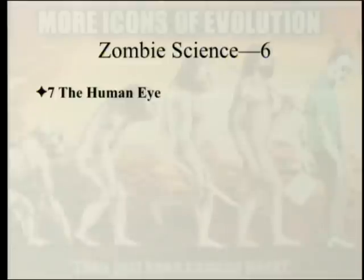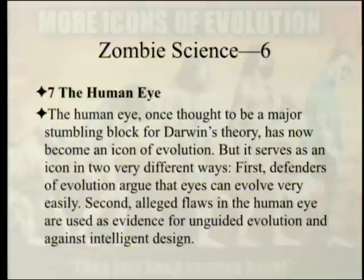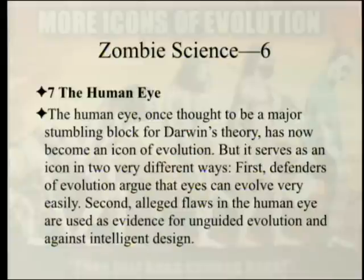Now we come to the human eye. We begin with Darwin's theory. The human eye, once thought to be a major stumbling block for Darwin's theory, has now become an icon of evolution — but it serves as an icon in two very different ways. First, defenders of evolution argue that eyes can evolve very easily. Second, alleged flaws in the human eye are used as evidence for unguided evolution and against intelligent design.